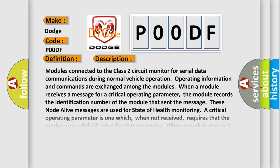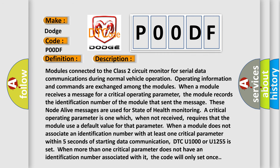Modules connected to the Class 2 circuit monitor for serial data communications during normal vehicle operation. Operating information and commands are exchanged among the modules. When a module receives a message for a critical operating parameter, the module records the identification number of the module that sent the message. These node alive messages are used for state of health monitoring.